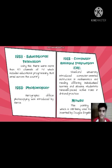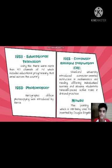In 1963, Stanford University introduced computer-assisted instruction (CAI) in mathematics and reading, offering individualized learning and allowing students to take a self-paced, active role in drill and practice. Also in this era, the mouse — a pointing device still used today — was invented by Douglas Engelbart.